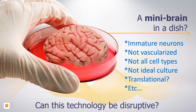Brain organoids, as any other models, have their intrinsic limitations. Most of those neurons are immature neurons. The organoids are not vascularized. We don't have all cell types represented, and we don't even know if we are growing them in the ideal culture conditions. There are fair questions regarding these limitations — are they a good model to show translatability? So we are pushing this field to have a model where we can study these brain organoids not only at the molecular and cellular level, but also at the network dynamics, asking if this technology can help us understand how brain networks mature over time.